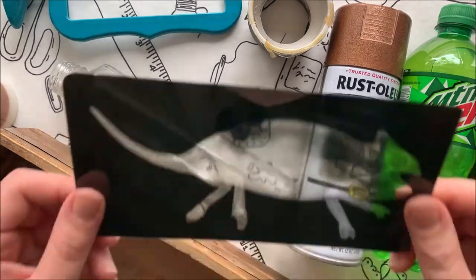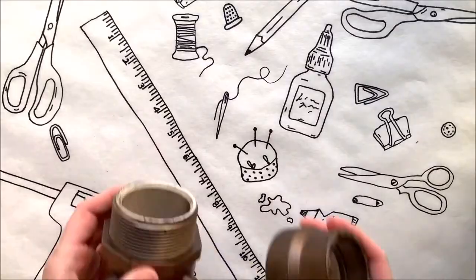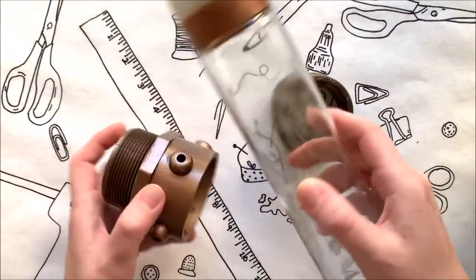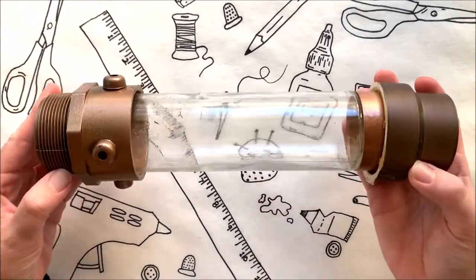You will also need x-rays. I found these really fun science animal prints online. Now, the reason why I say use a Voss Water bottle is it just happens to be the perfect size to fit inside of the PVC pipe. It also has a great test tube-like shape.